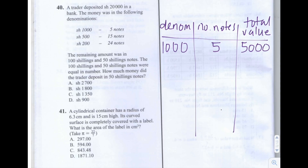For the second row, we have 500 shillings notes. The trader deposited 15 of the 500 shilling notes. To work out the total value, that's 500 times 15. You can do this in your head or do a long multiplication — I'm going to write it down so you can see how I get the answer.